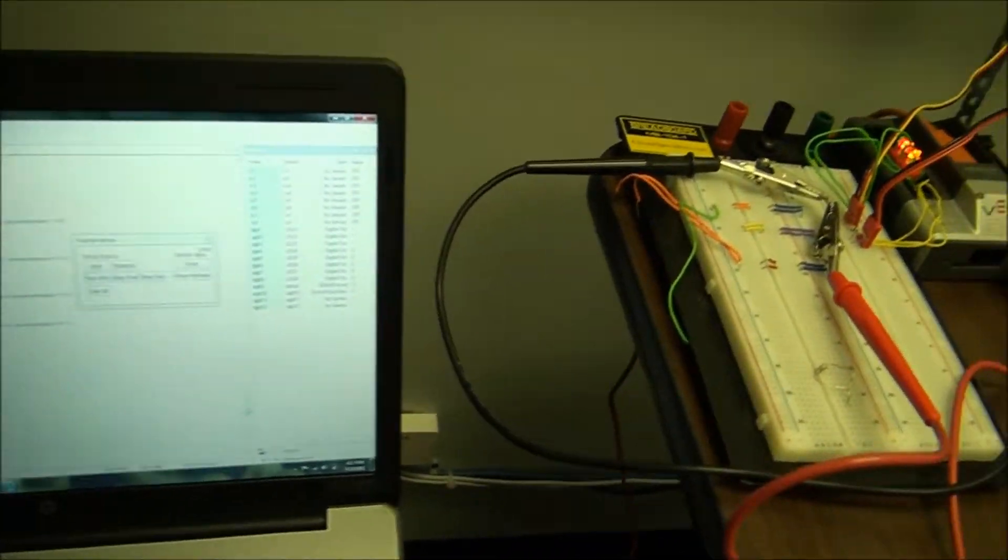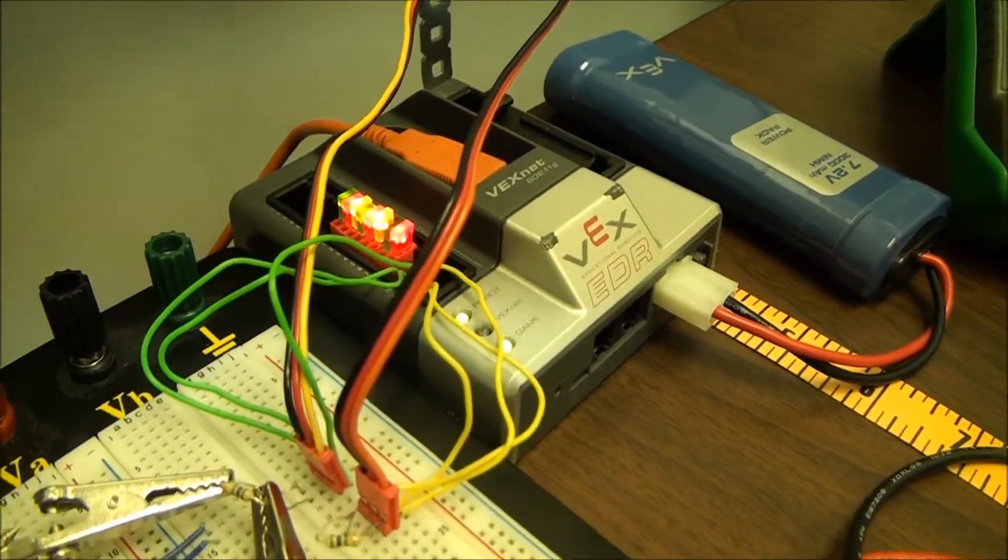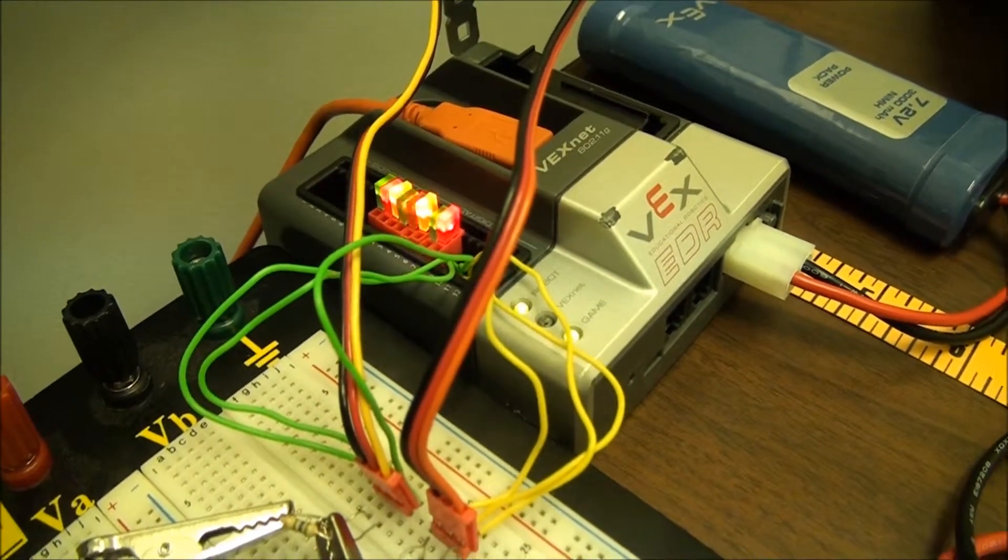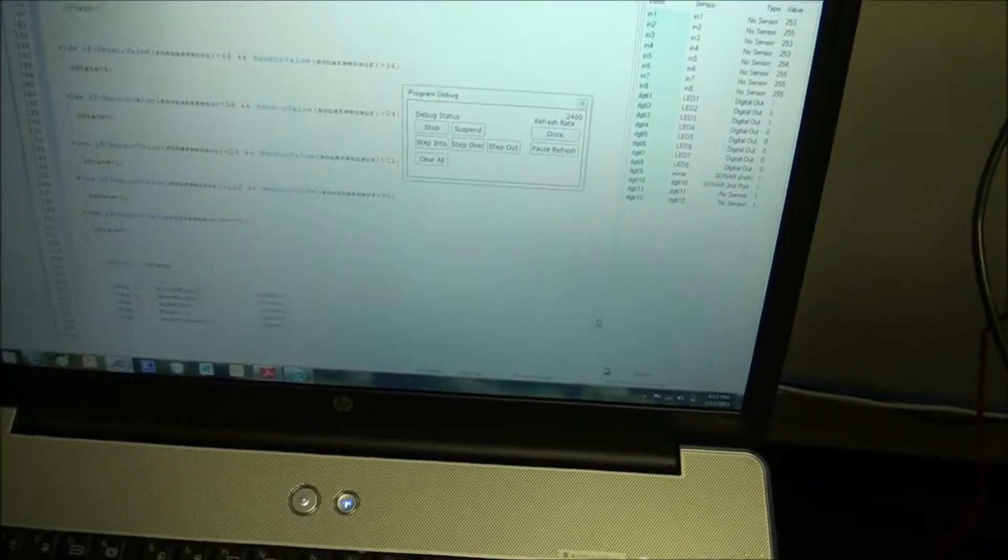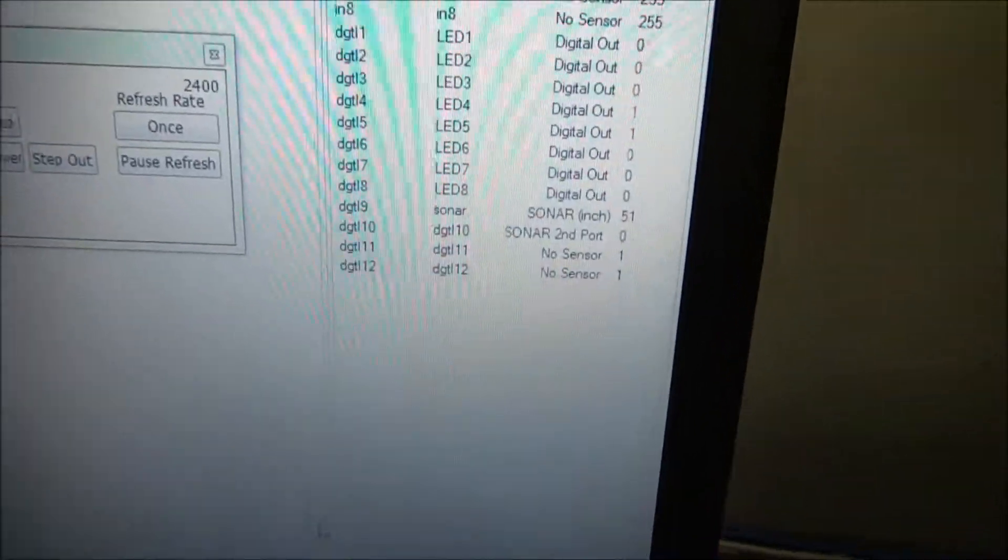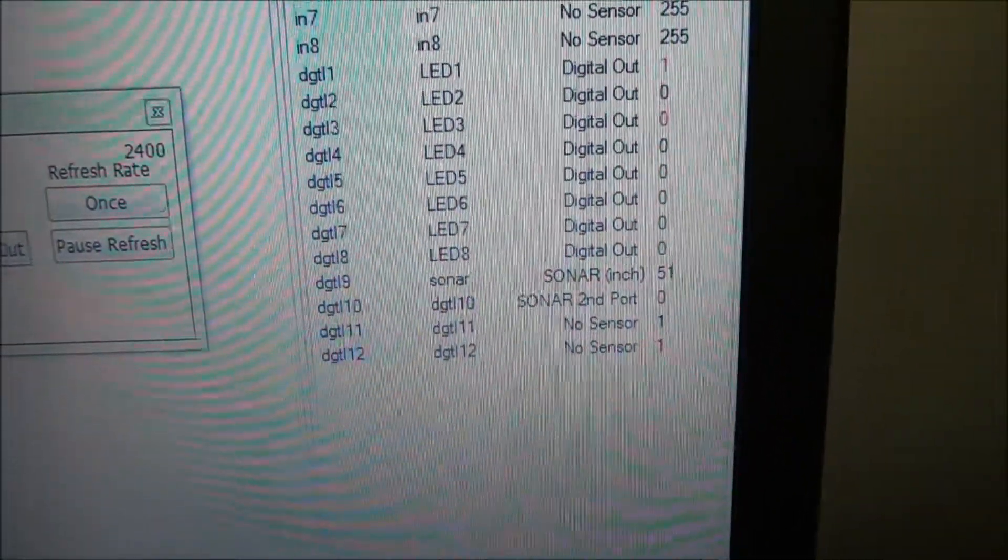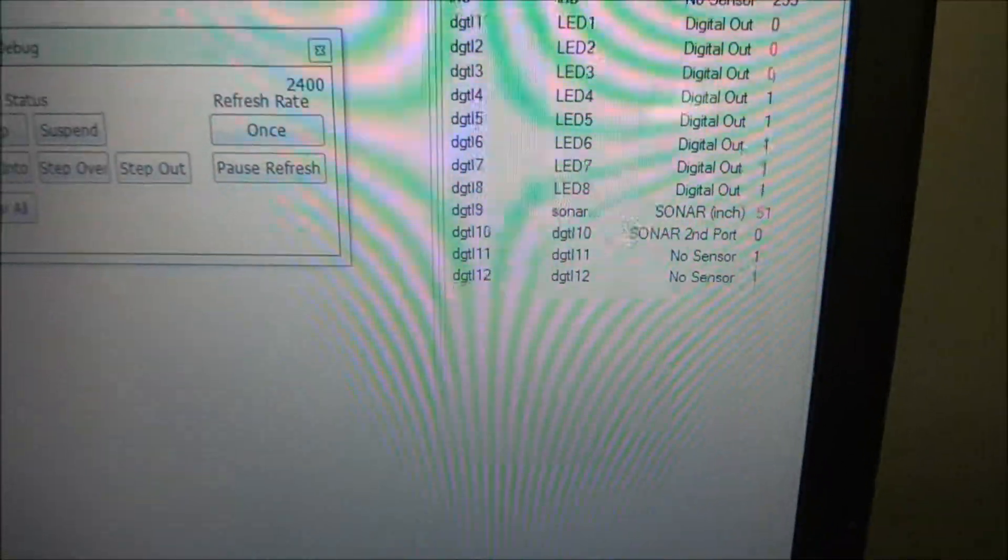The LED display is playing what's called the Cylon Eye LED function. And then if you look at the value for the sonar, it's at around 51, 52, somewhere around there. So that checks out good.